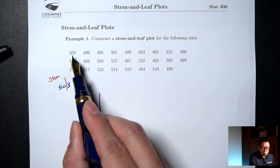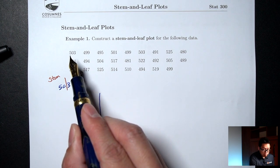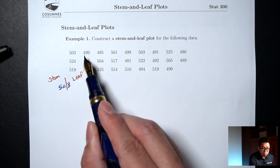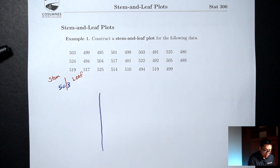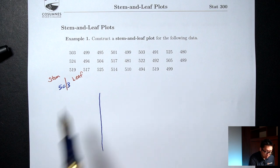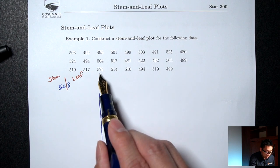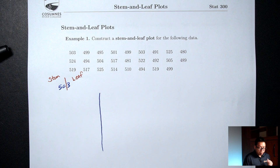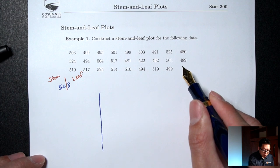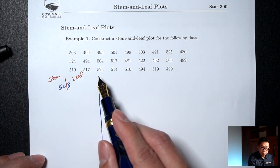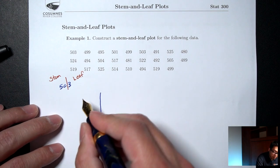So the stem for 503 is 50. The stem for 499 is 49. The stem for 495 is also 49. I have some 48s, some 51s, some 52s. So if I look at my stems, which are just the first two digits of my data, I have 48 all the way up to 52. So I'm going to list out all the possible stems.